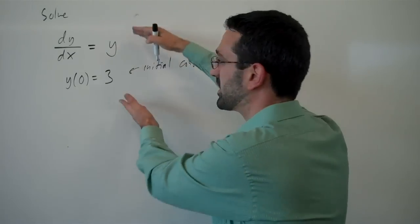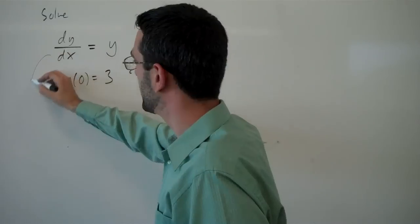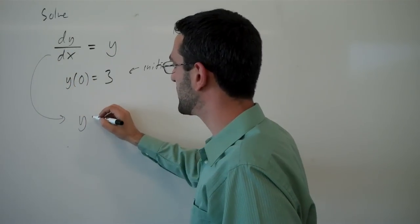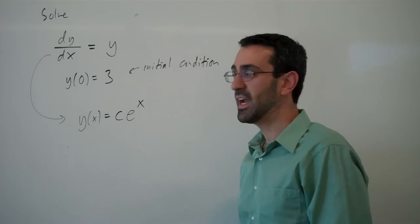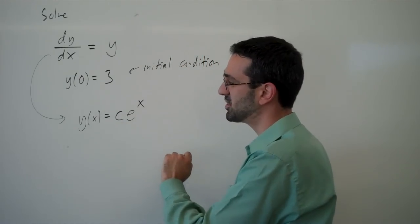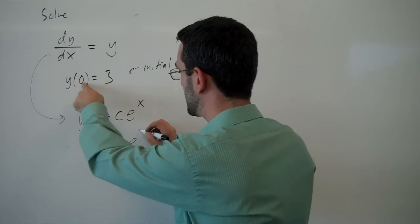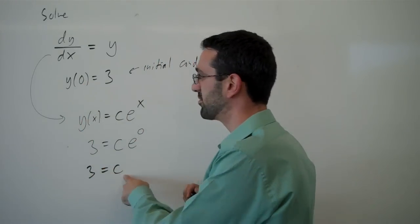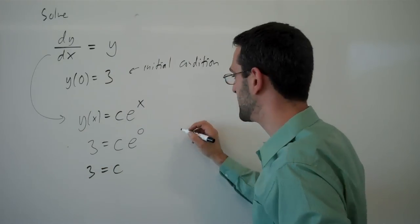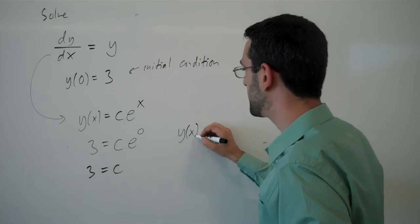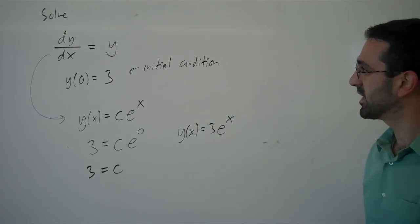And when you have it, this becomes an initial value problem. The idea here is, this differential equation gives us a family of solutions. And then, using our initial condition, we know that y is going to be 3 when x is 0. And it lets us solve for that constant. So, from a family of solutions, it lets us narrow down one specific solution, or one particular solution.